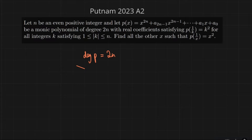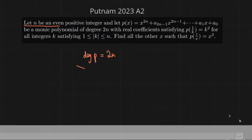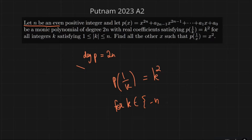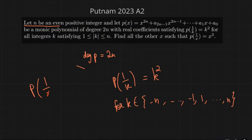The question states: let n be an even positive integer and p(n) be a monic polynomial of degree 2n such that this peculiar identity is satisfied — p(1/k) = k² for k in the set {-n, ..., -1, 1, ..., n}. For these 2n numbers, this identity is satisfied. The problem asks to find all other real numbers x such that the same identity is satisfied. If you wish to give the problem a try yourself, please pause the video and do so now.